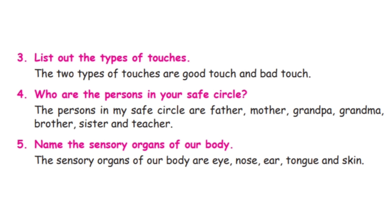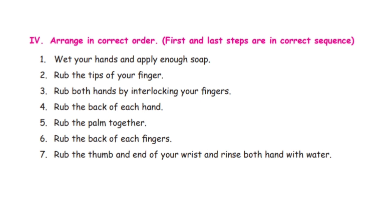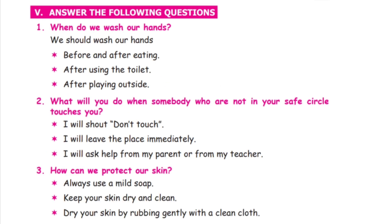Fifth, name the sensory organs of our body. The sensory organs of our body are eye, nose, ear, tongue, and skin. Next, arrange in correct order — the first and last steps are given in correct sequence, so read the other sentences clearly and arrange them in the correct order.